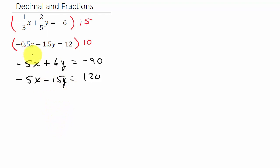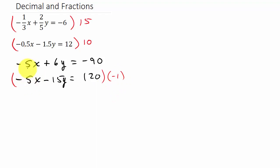What I can do is multiply the second equation by negative 1, because negative 1 times negative 5 is positive 5, and so negative 5 plus 5 is 0, eliminating the x terms.